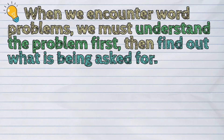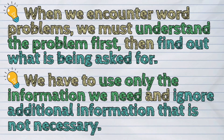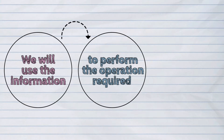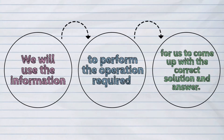When we encounter word problems, we must understand the problem first. Then, find out what is being asked for. We have to use only the information we need and ignore additional information that is not necessary. Then, we will use the information to perform the operation required, for us to come up with the correct solution and answer.